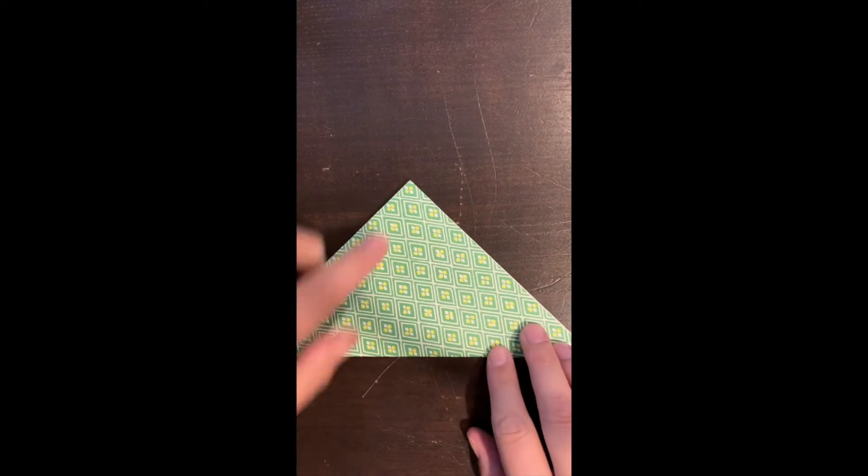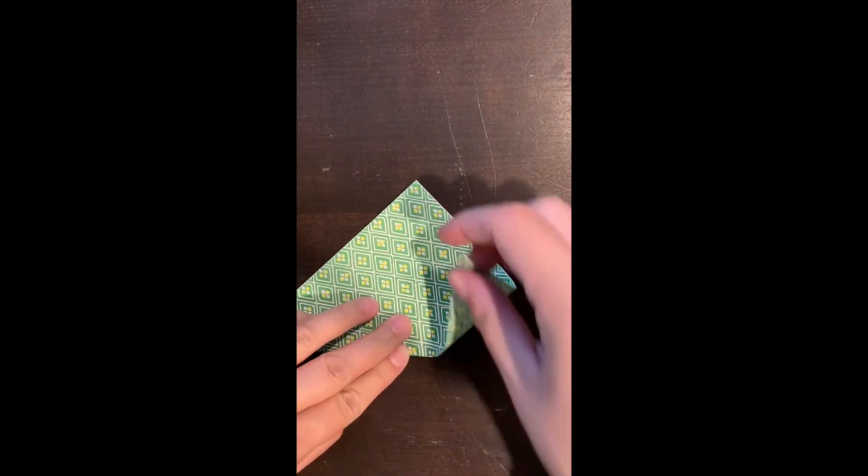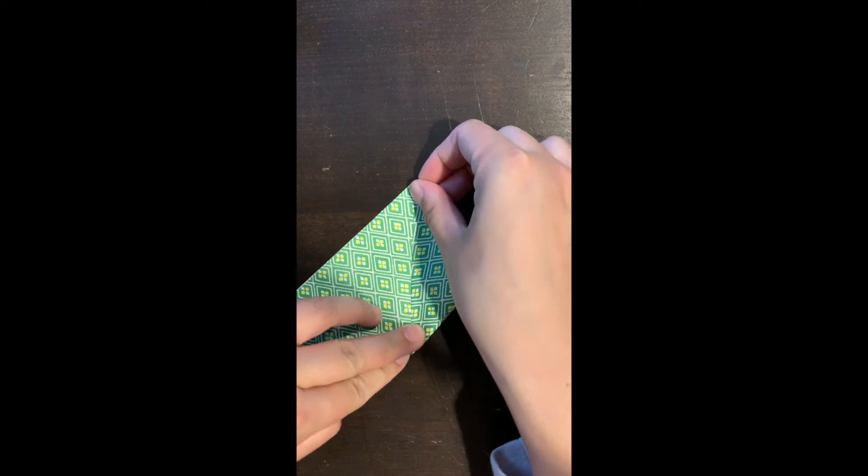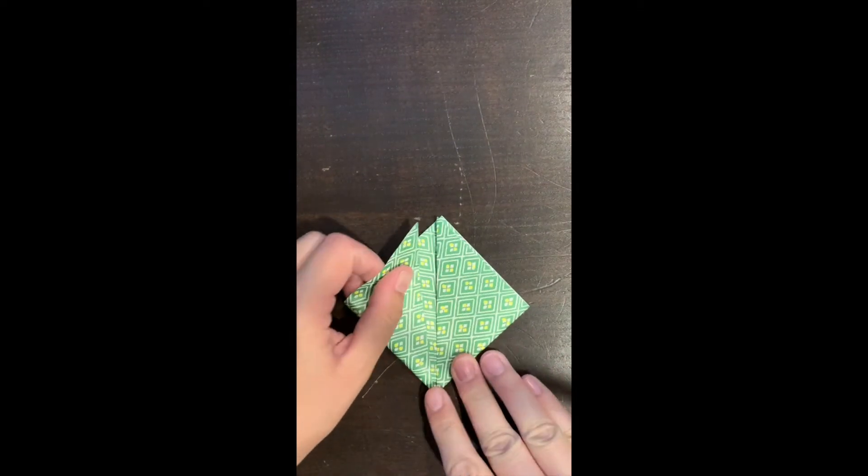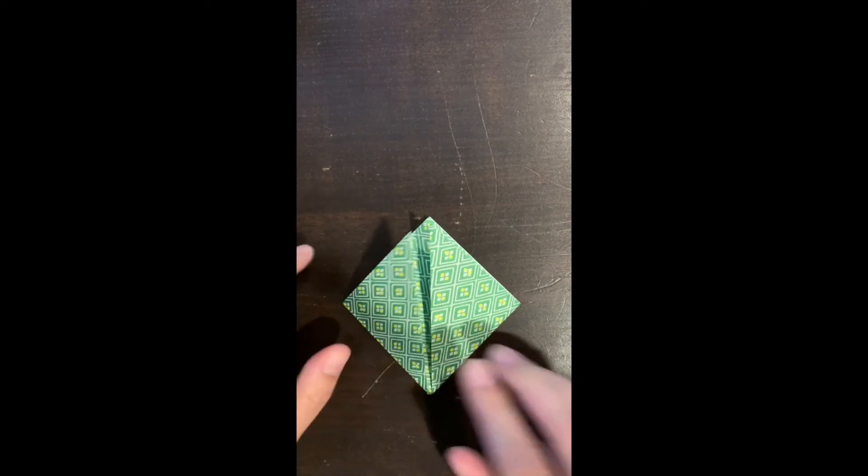Now, find that center point, take one corner, fold it up to the top. Take your other corner and do the same so that they match and meet in the middle.